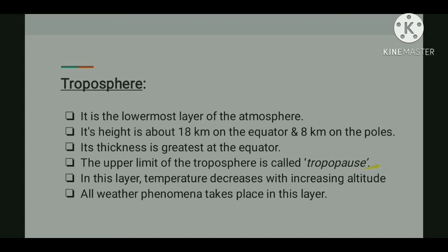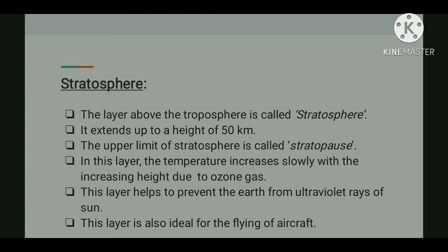This rate of decrease of temperature is called the normal lapse rate. The upper limit of the troposphere is called the tropopause — meaning where the mixing stops. Above the tropopause, a new layer starts: the stratosphere, which extends up to a height of 50 kilometers. The upper limit of the stratosphere is called the stratopause, and temperature increases slowly with increasing height in this layer.